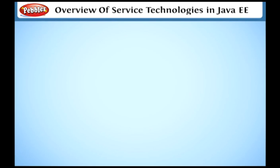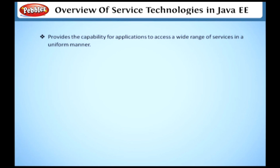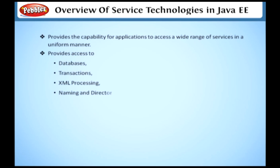In this lesson, we will talk about the overview of the various service technologies in Java EE platform. The Java EE platform service technologies provide the capability for applications to access a wide range of services in a uniform manner. Here, we will discuss about the technologies that provide access to databases, transactions, XML processing, naming, directory services, and enterprise information systems. Let's look at each technology one by one.